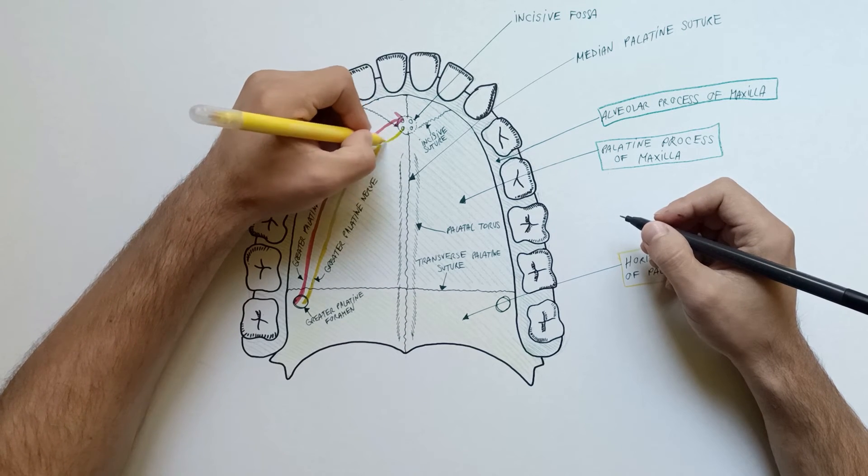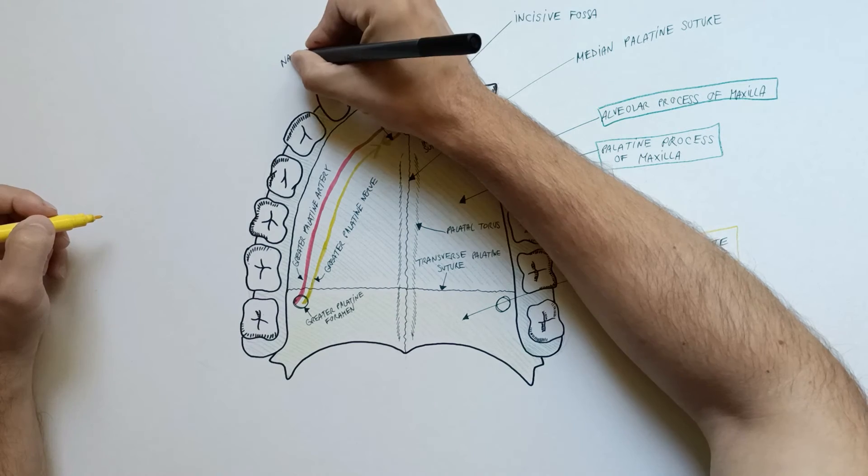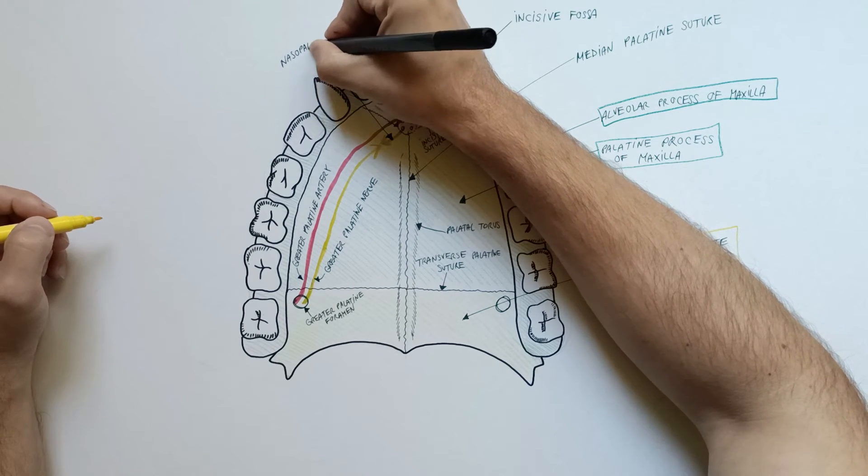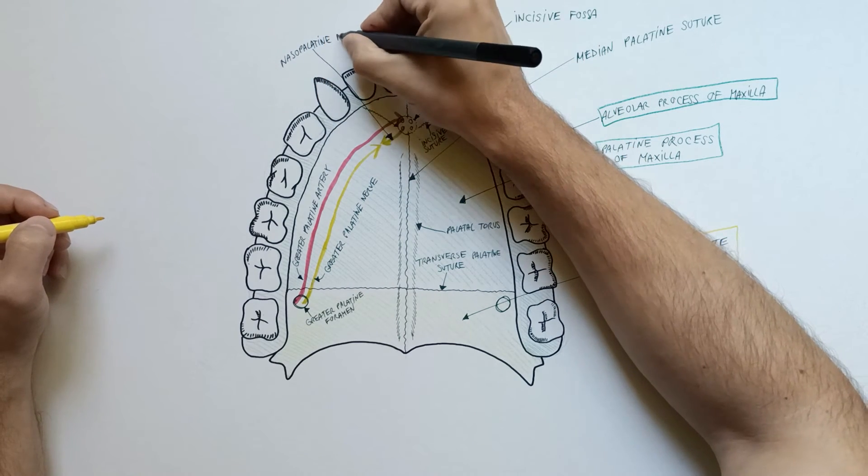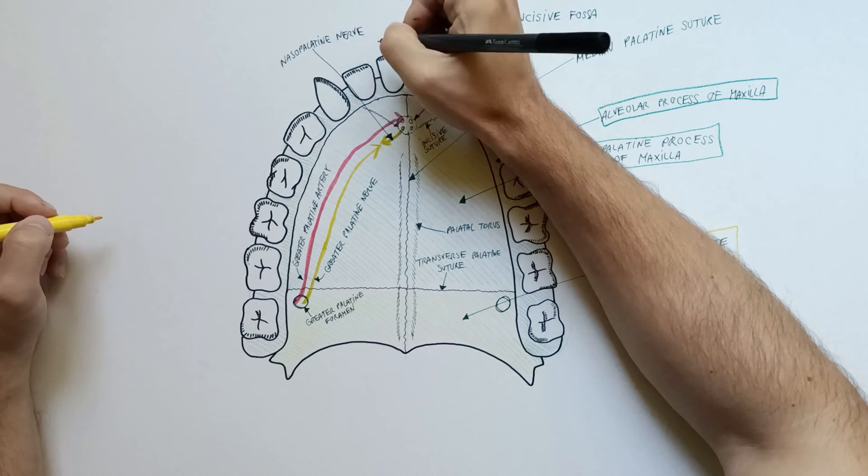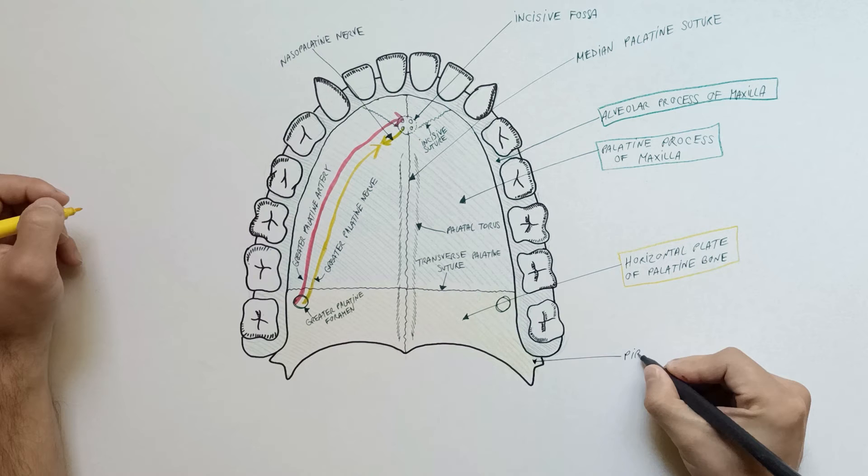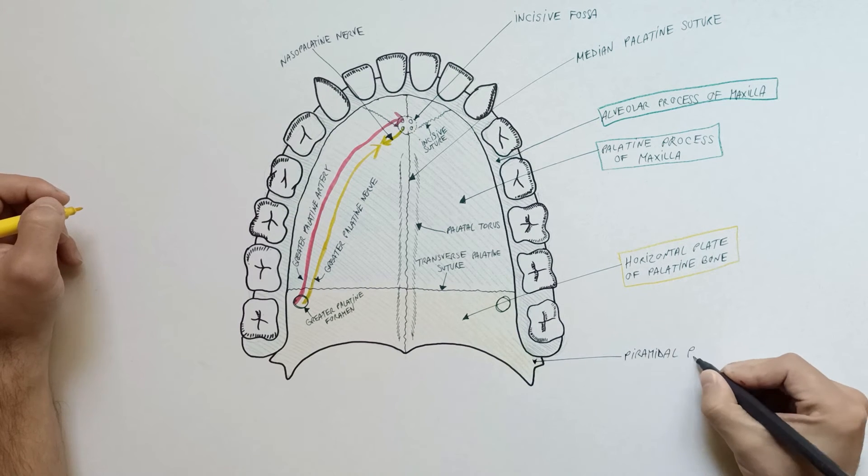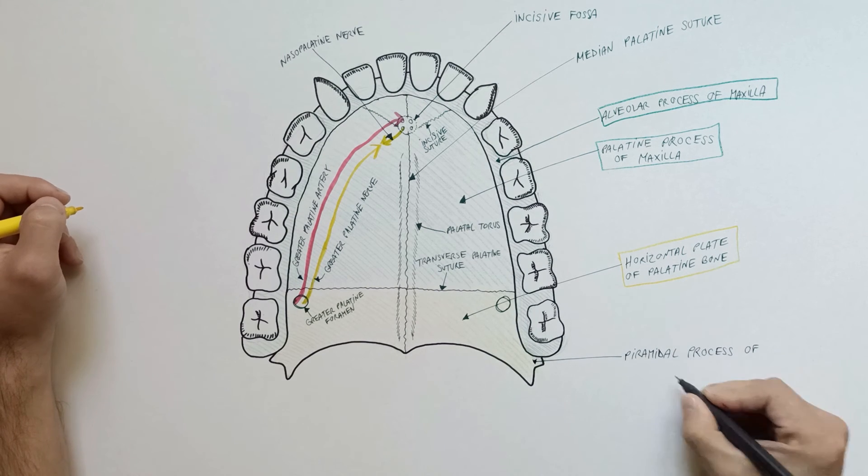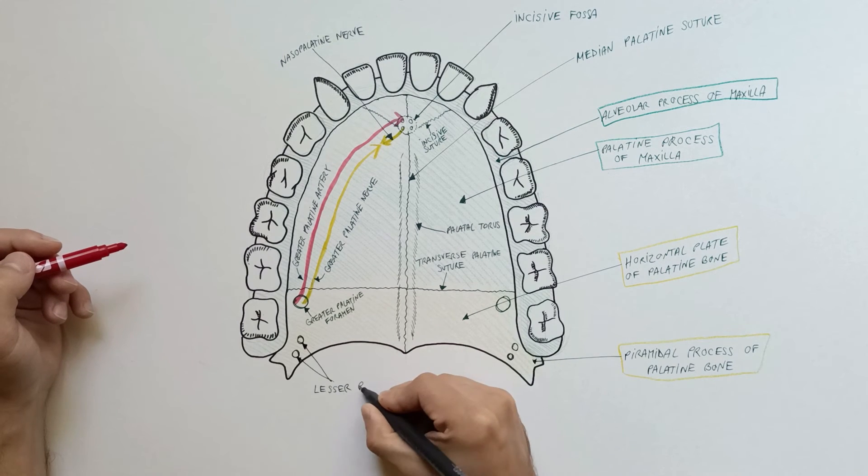At this level, anastomosis with the nasopalatine nerve which reaches the oral cavity after passing through an incisive canal. The most posterior part of the horizontal lamina of the palatine bone is the pyramidal process of the palatine bone, which is pierced by the lesser palatine foramina.